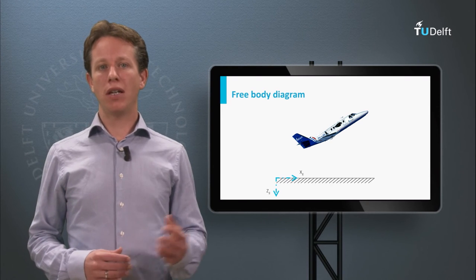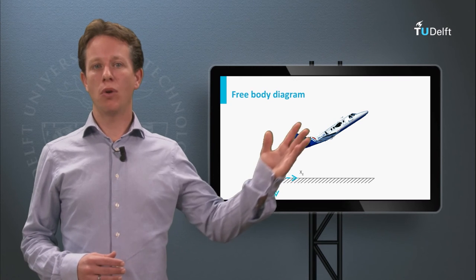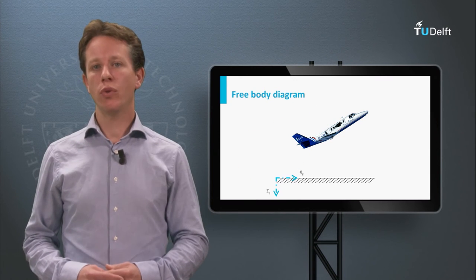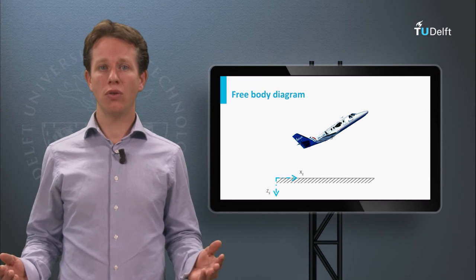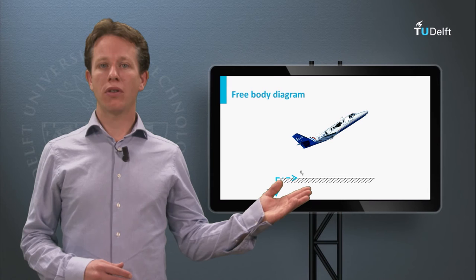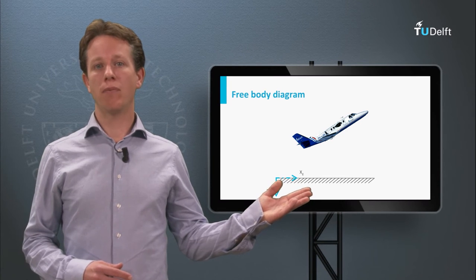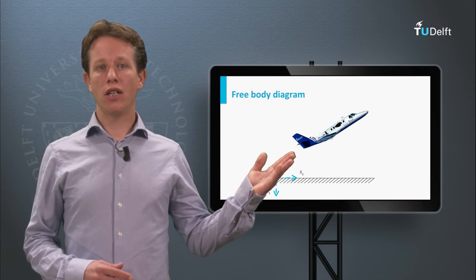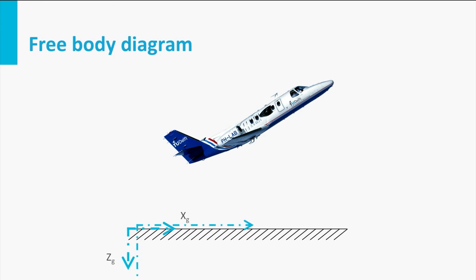The forces acting on the aircraft depend on its orientation and its motion relative to the air, so it is useful to define reference frames attached to the aircraft. We can start by defining a reference frame with the same orientation as the Earth-fixed frame but attached to the aircraft itself — this is called the moving Earth axis system. We can also attach an axis system fixed to the aircraft body, which we call the body axis system.